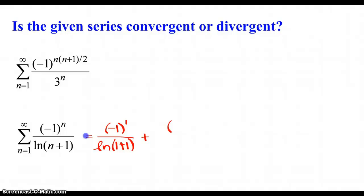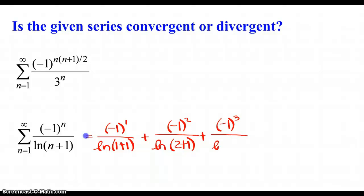When n equals 2, we have negative 1 squared times the natural log of 2 plus 1. And when n equals 3, we have negative 1 cubed times the natural log of 3 plus 1. So we are definitely dealing with an alternating series — we can clearly see in our numerators. We have a negative term, then a positive term, then a negative term.